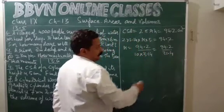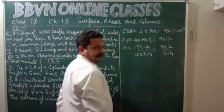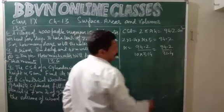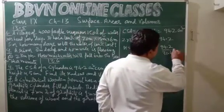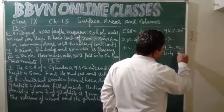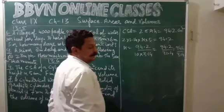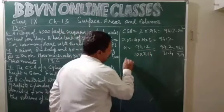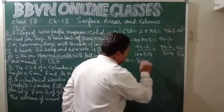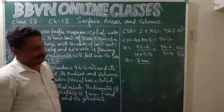Now, there is one place after the decimal in both numerator and denominator. Multiplying numerator and denominator by 10, this becomes 942 upon 314. On dividing, we get 3. So r equals 3 centimeters. We have got the radius of the base of the cylinder.